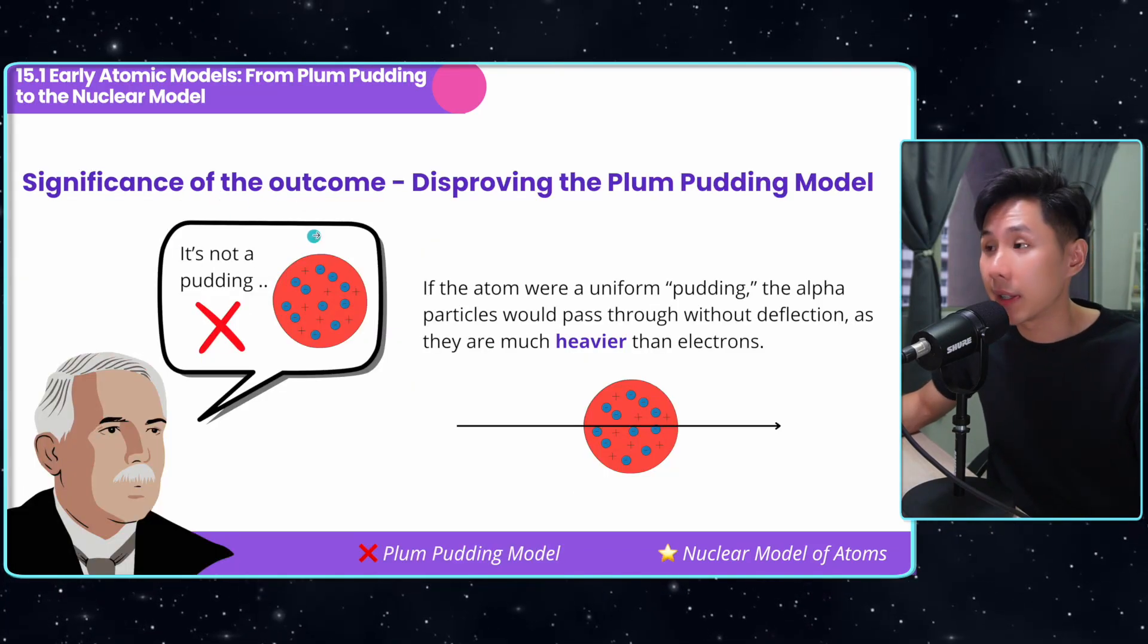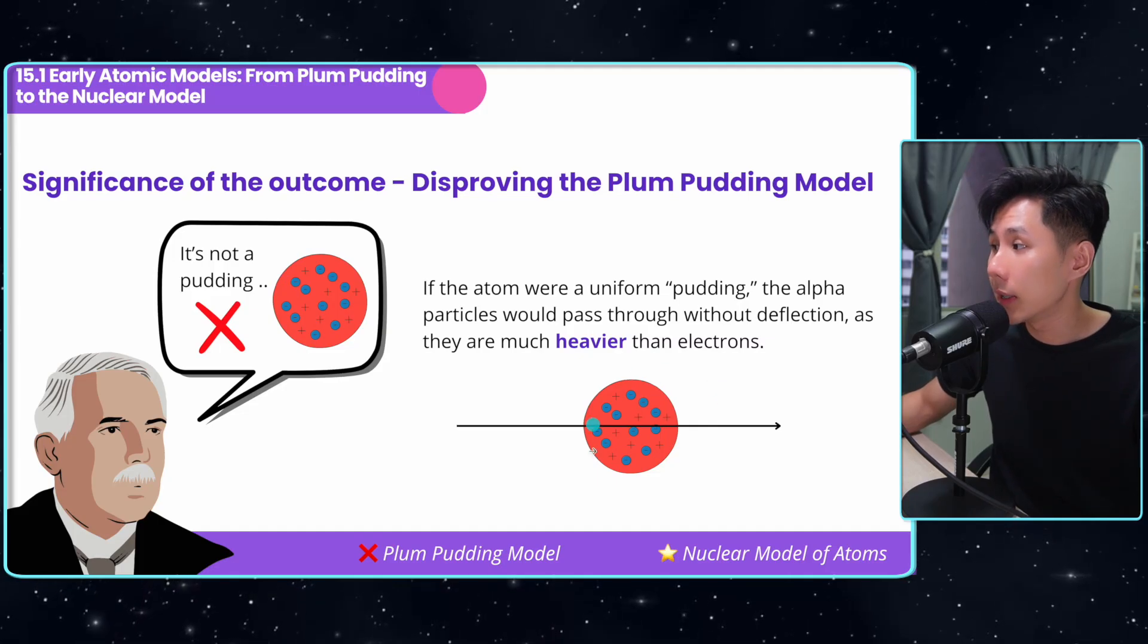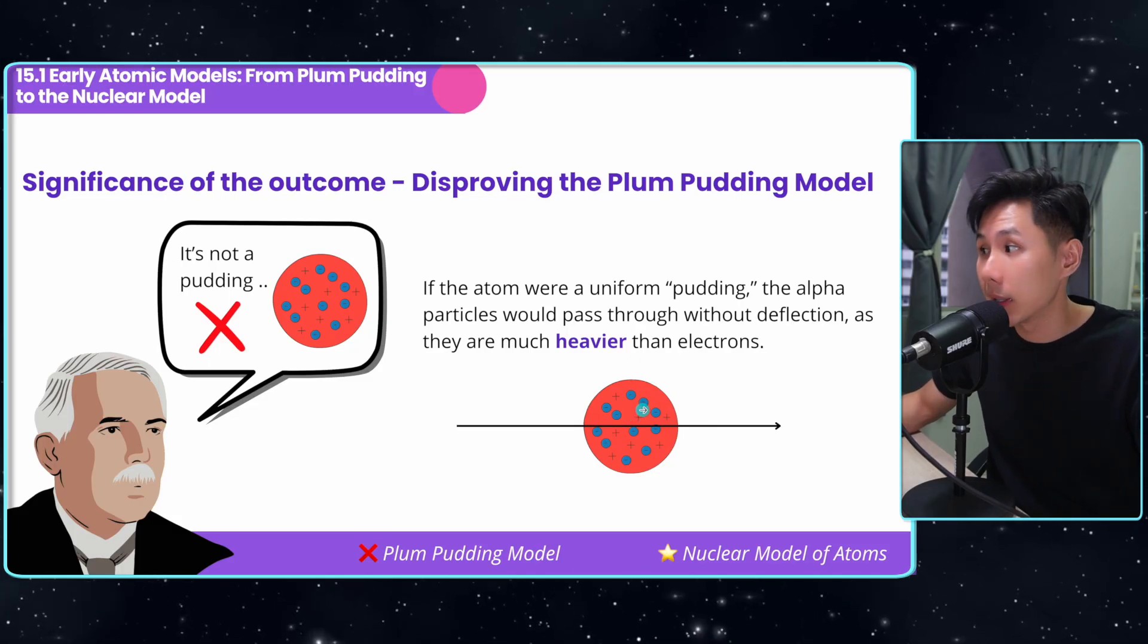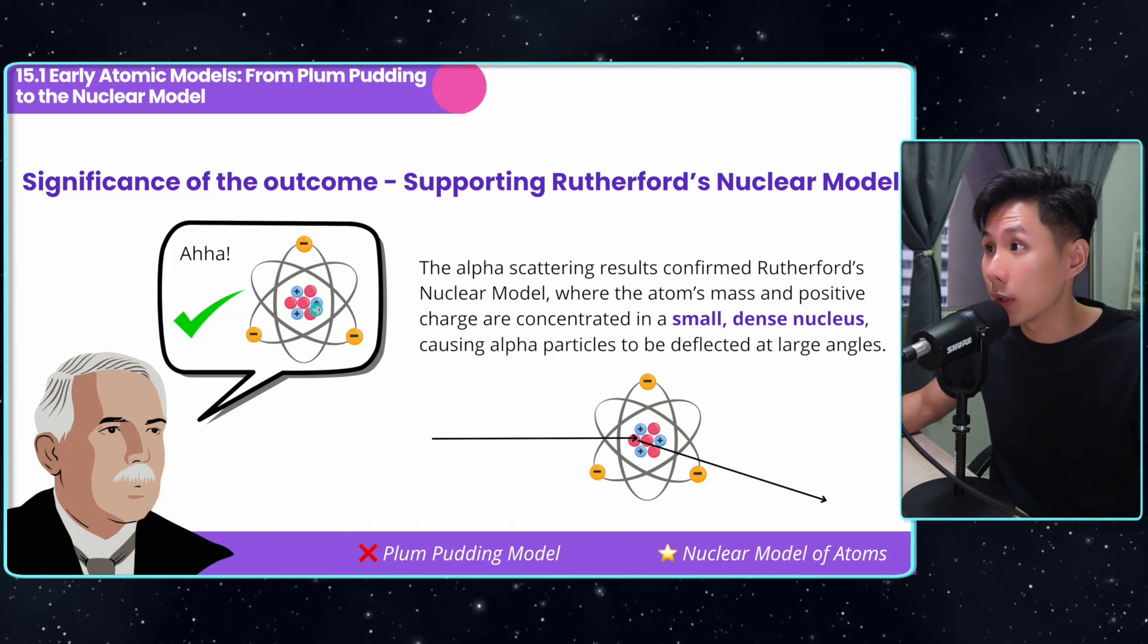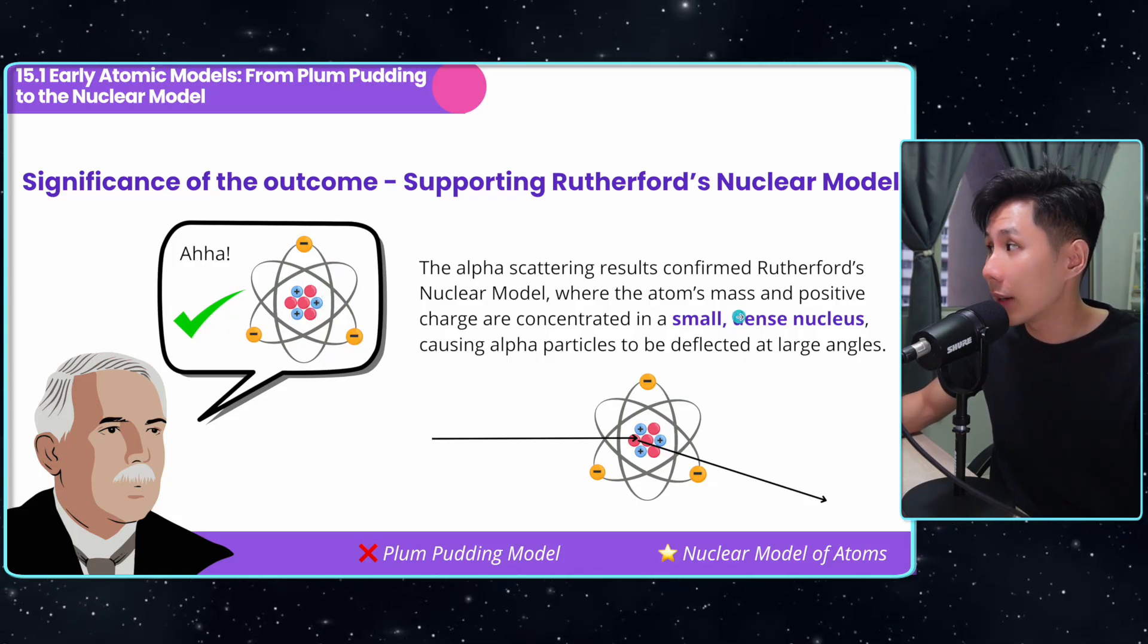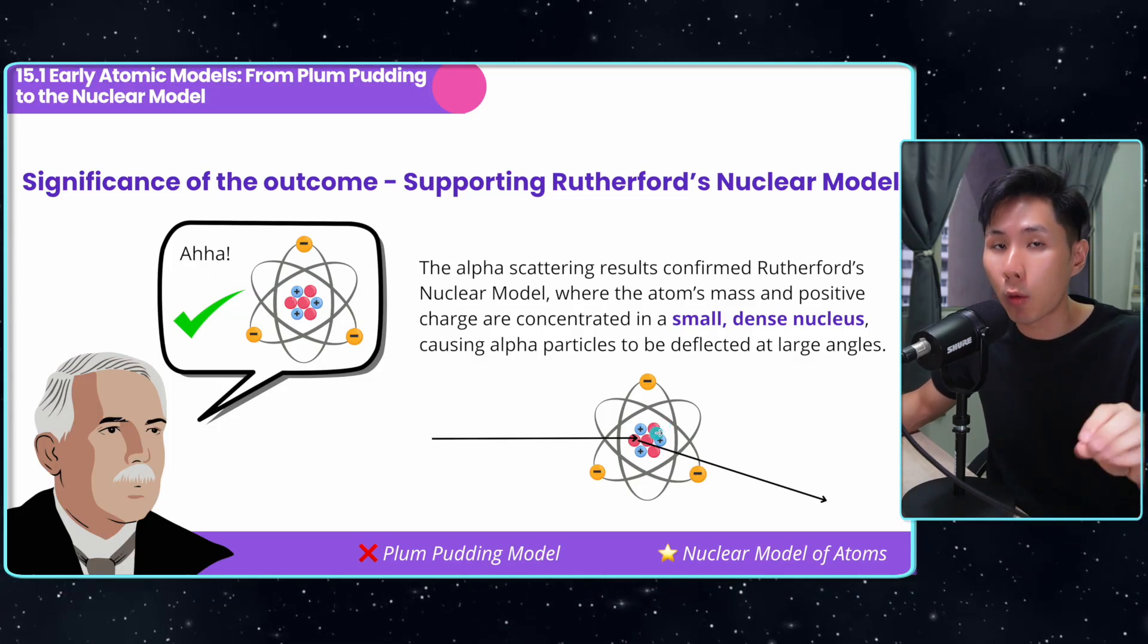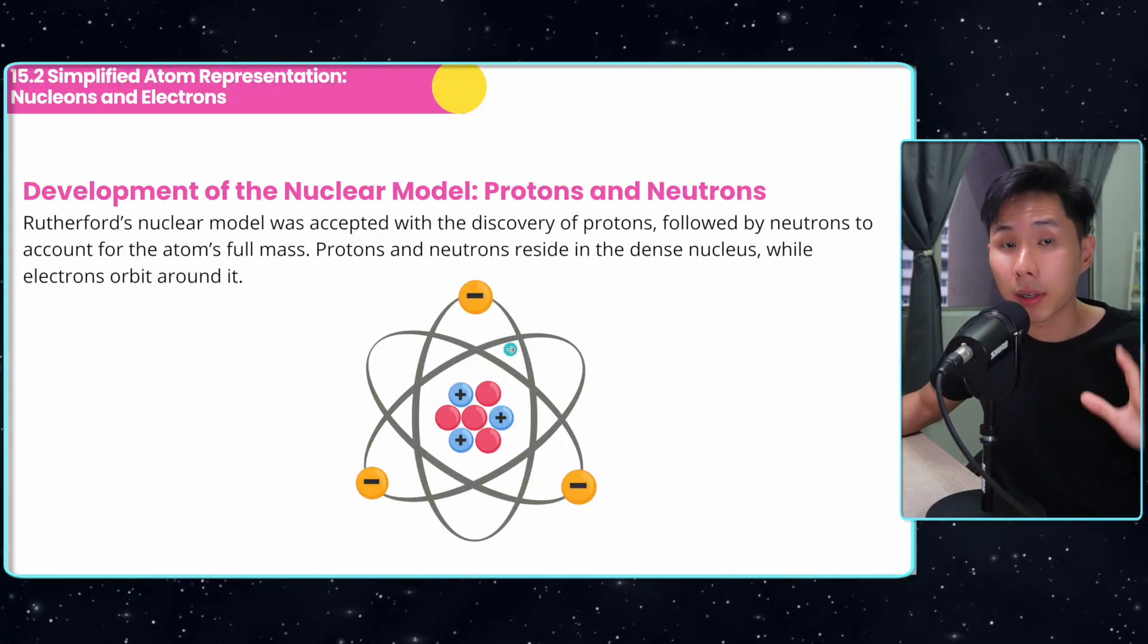The significance of the outcome is that Ernest Rutherford disproved the Plum-Pudding model. Because if the atom is a Plum-Pudding model, alpha particles would just pass straight through and there should be no deflection. What the outcome says is that atoms should look like this, which is what we know as the nuclear model or solar system model, in which the atom's mass and positive charge are concentrated in a small dense nucleus, which explains why the particles were deflected. So now we know that this is how an atom looks like internally.